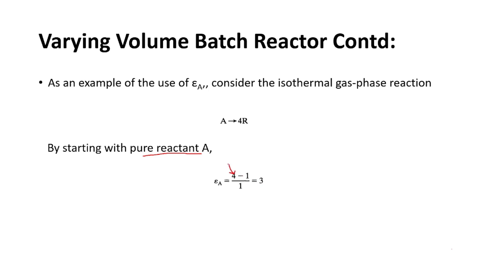For this case, εa is calculated as (4 - 1) / 1 = 3. Here, 4 represents the moles when complete conversion of A has occurred — one mole of A converts into four moles of R. The 1 in the numerator represents the moles at no conversion, where only one mole of A is present. So εa = (4 - 1) / 1 = 3.